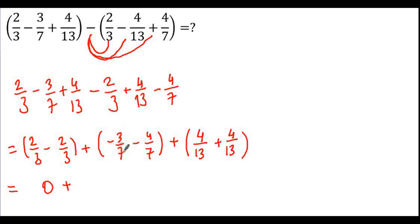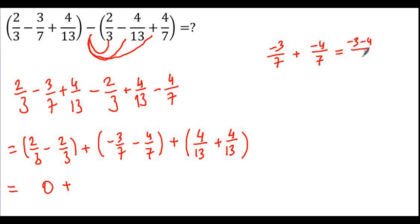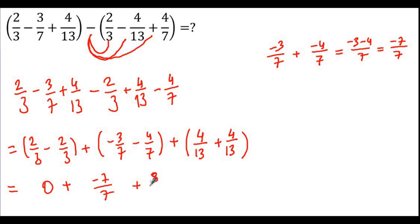Plus, I have minus 3 over 7 minus 4 over 7, so I can rewrite this as minus 3 over 7 plus minus 4 over 7. Minus 3 minus 4 is minus 7 over 7. Then for the third group, the denominators are both 13, so 4 plus 4 equals 8 over 13.